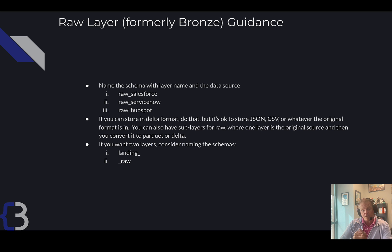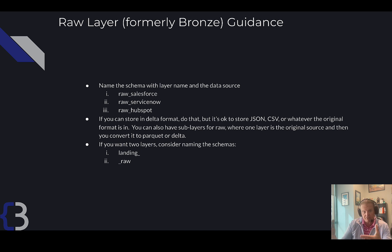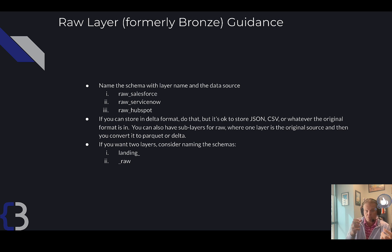There's an argument for seeing raw data in Delta or Parquet format. If you need that, create a landing underscore schema for the original data in JSON and CSV, and then create a raw underscore schema for the Parquet and Delta files. Having data in the original format can be really helpful in case there were any conversion problems between JSON and Delta — you'd be able to track that down through lineage and see what needed to change.